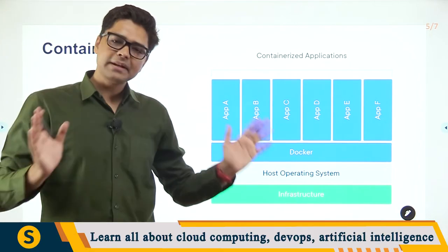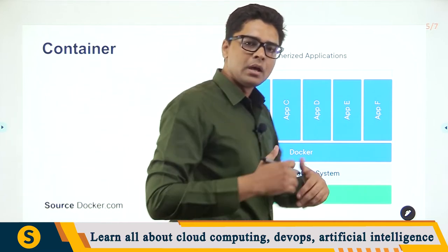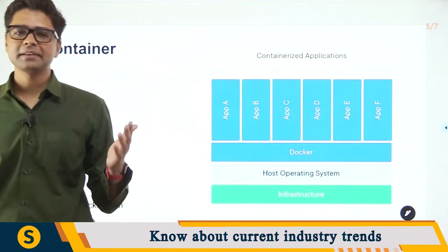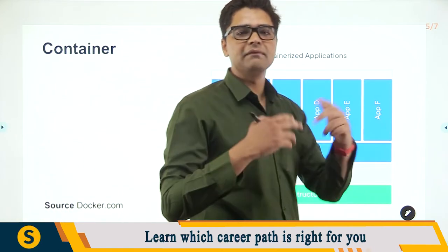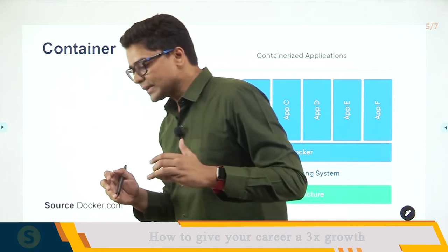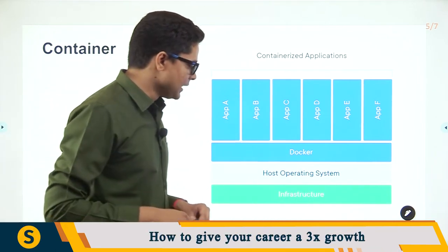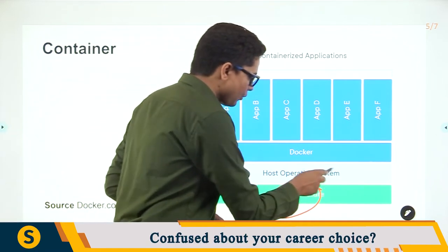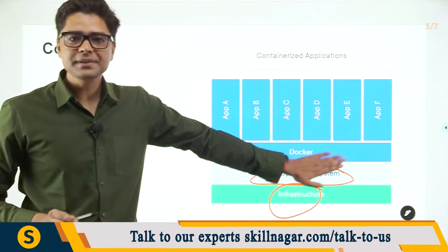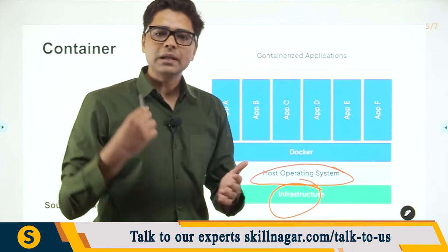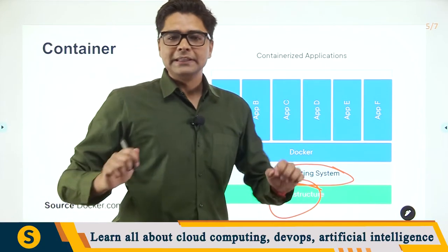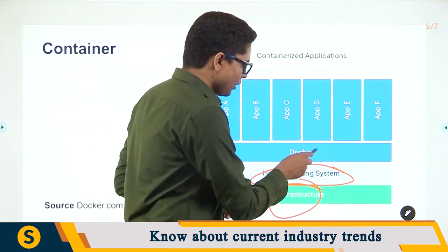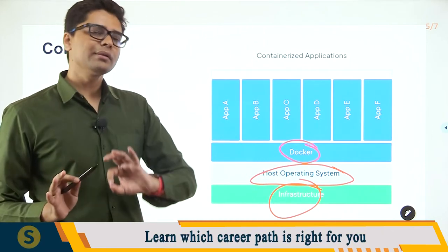The traditional approach involves building every single piece of software and hardware separately, with different operating systems on individual machines and developers using different OSes on their own development machines. Now, with containers, let's look at this diagram taken from the official Docker website. We have the infrastructure — the hardware — and a host operating system. Now, the host OS no longer matters; it can be Ubuntu, Windows, or Mac. The container software is going to take care of everything.